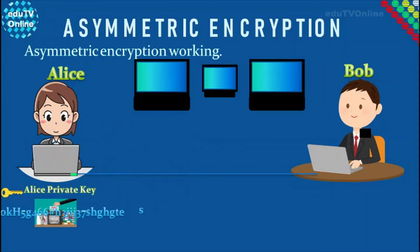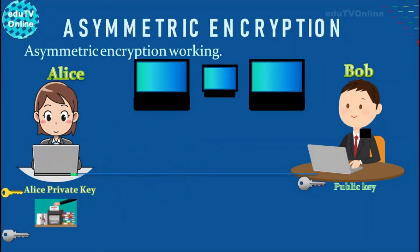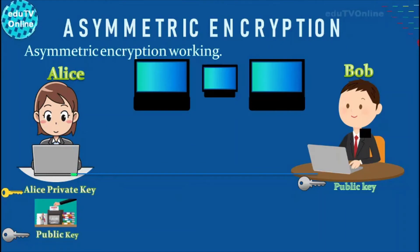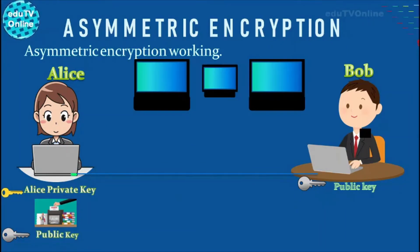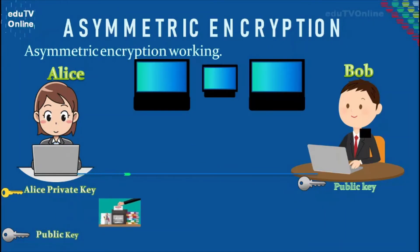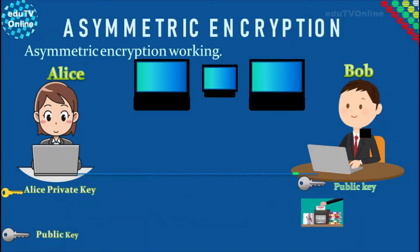Then, the private key is encrypted using the public key known to both Alice and Bob. Then Alice sends the message over the internet.